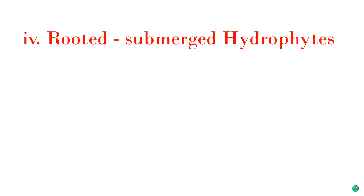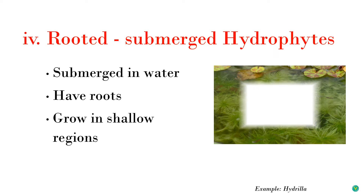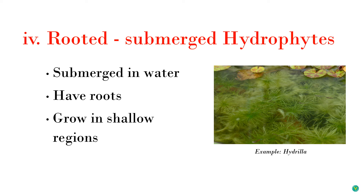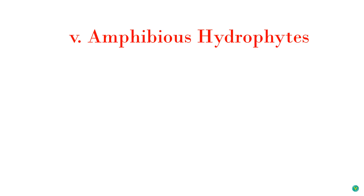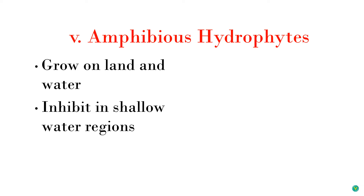The fourth type is rooted submerged hydrophytes: these plants are also submerged in water but have roots. They are restricted to shallow areas where they get adequate supply of sunlight; an example is Hydrilla. The last subdivision is amphibious hydrophytes. Like amphibians which live on both land and water, these plants are adapted to both aquatic and terrestrial modes of life. They grow in shallow water regions and form shallow vegetation.